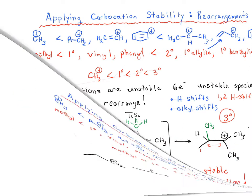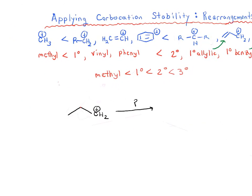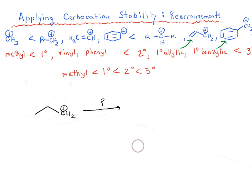In this video, I want to do some simple applications of rearrangements, continuing the same theme, and ask ourselves in each case whether a rearrangement is likely to occur. Starting with this first example — this alkyl CH2 — the first question to ask when considering a rearrangement is: what type of carbocation are you looking at? This carbocation is a primary carbocation, because it's only attached to one carbon and two hydrogens.